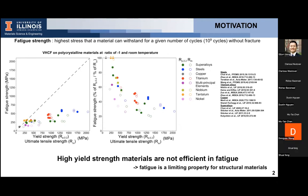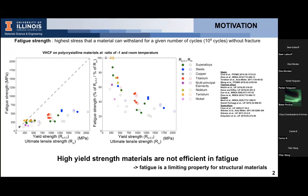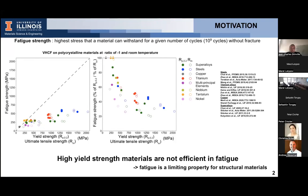There is another way to present the data: the fatigue ratio, which is the fatigue strength as a percentage of the yield strength or ultimate tensile strength. This is indicative of the efficiency of an alloy in fatigue. Materials with high yield strength tend to have very low fatigue efficiency, meaning they do not sustain a high number of fatigue cycles. For copper alloys with relatively low yield strength, fatigue strength can exceed yield strength, whereas for superalloys or steels it can be as low as 40 percent.